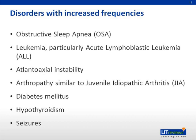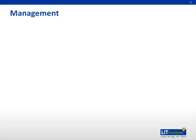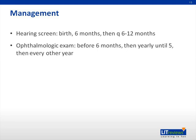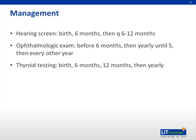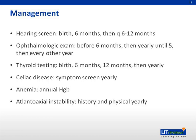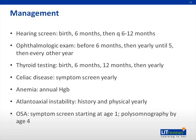Patients with Down syndrome need special screening on a longitudinal basis. Hearing screens are recommended at birth, 6 months of age, and then every 6 to 12 months throughout childhood. Ophthalmologic screening is recommended at birth, 6 months of age, yearly until age 5, and then every other year thereafter. Thyroid function testing should be performed at birth, 6 months, 1 year, and then annually. Patients should undergo annual screening for celiac disease symptoms and annual hemoglobin checks. Screening for atlantoaxial instability should be part of the annual physical examination. Screening for obstructive sleep apnea symptoms should begin at 1 year of age, and a polysomnogram should be performed by age 4 in all patients.